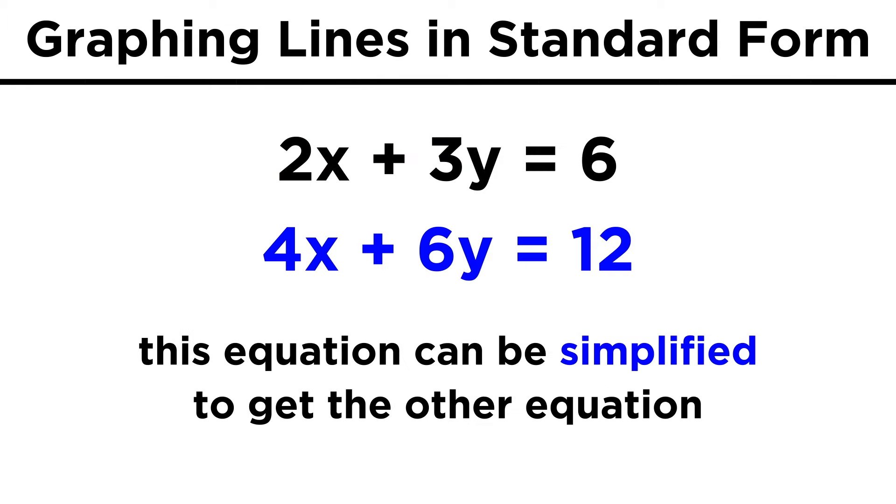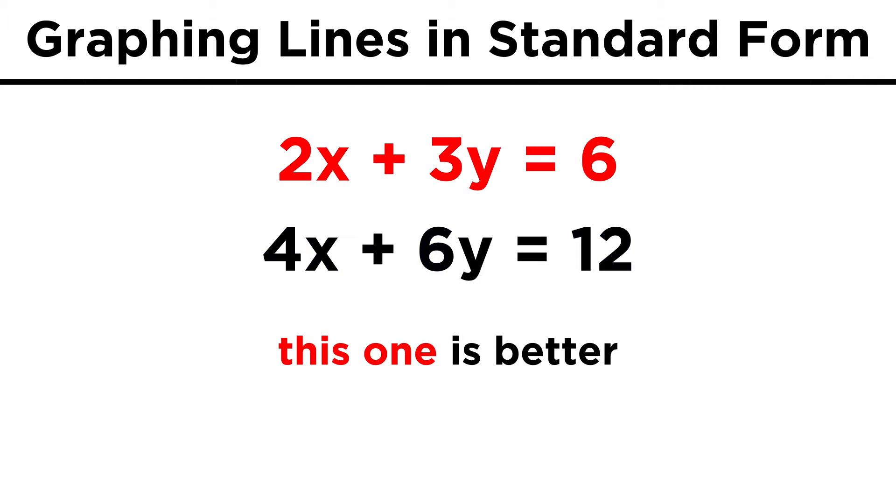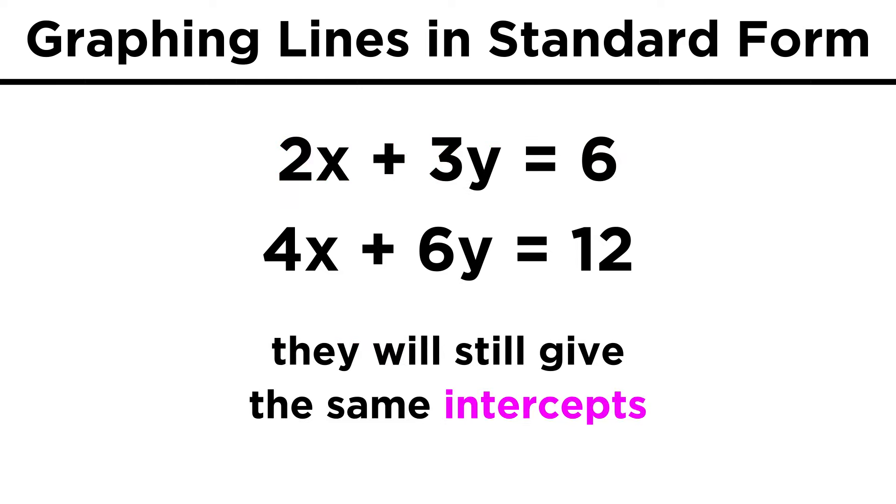Four, six, and twelve can all be divided by two to get a simpler version of the equation, so this will be the more correct version of the equation. We would still get the same values for the intercepts, and therefore the same line, but we always want the simplest form of the equation possible, so we must bear this in mind when converting between the two linear forms.